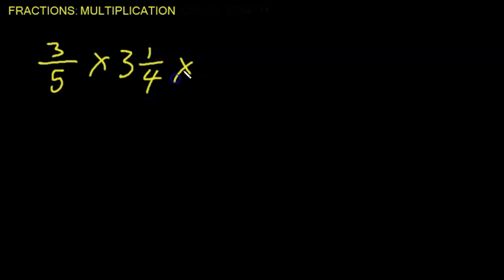So let us look at one more example. So this you have 3 over 5 times 3 and a quarter times 2 over 7.